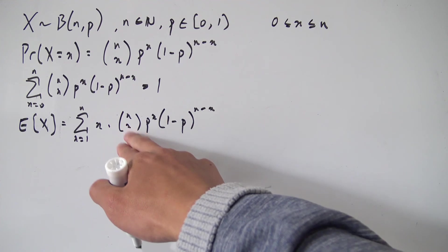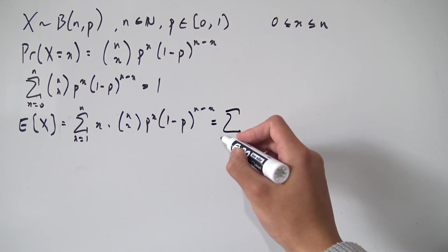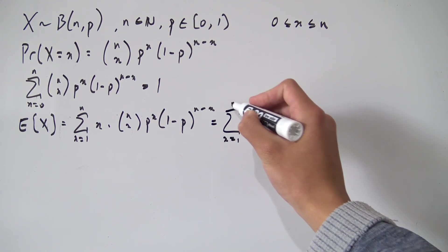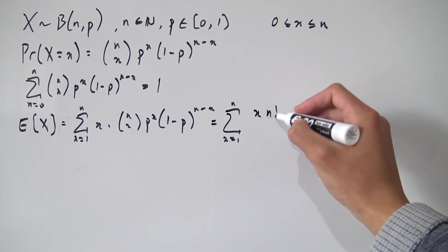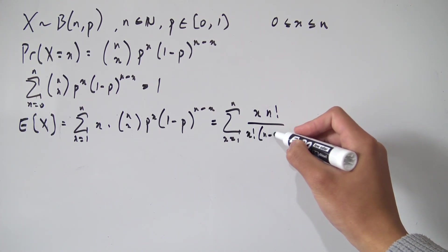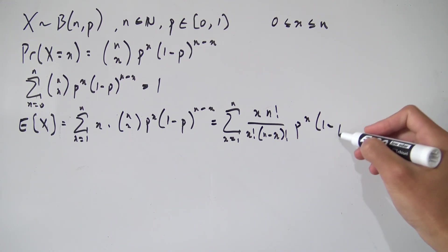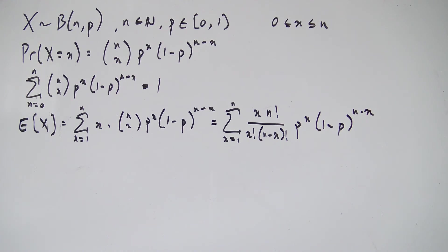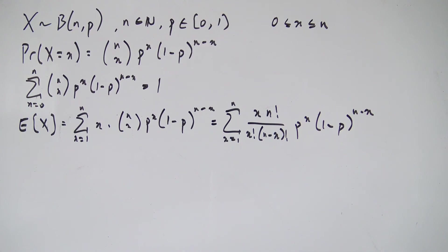Let's expand out N choose X into all of the factorials. This is going to equal the sum running from X equals 1 up to N of X in the numerator, times N factorial over X factorial times N minus X factorial, then still P to the X, times 1 minus P to the N minus X. So we've expanded out that N choose X.